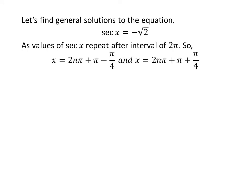Let us find the general solutions. As we know, the values of secant of x repeat after an interval of 2 times pi. So the general solutions are 2 times n times pi plus pi minus pi upon 4, and 2 times n times pi plus pi plus pi upon 4, where n is an integer.